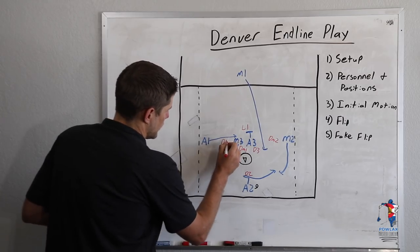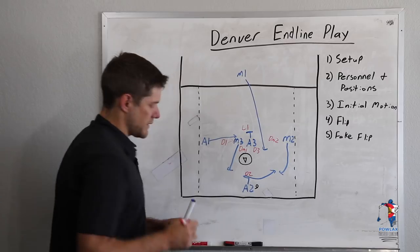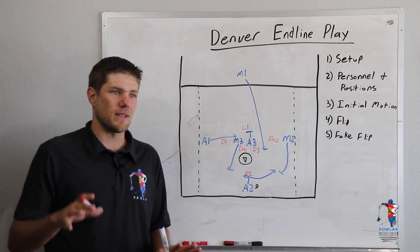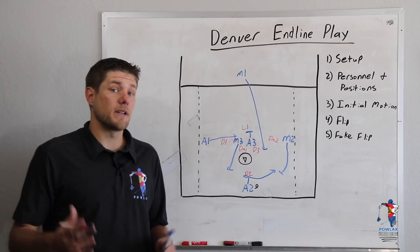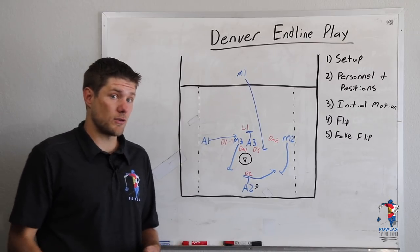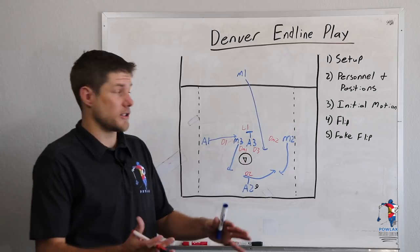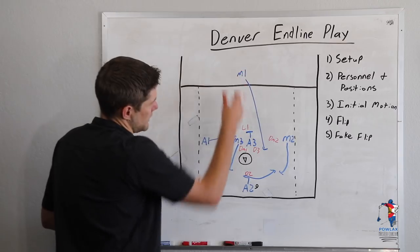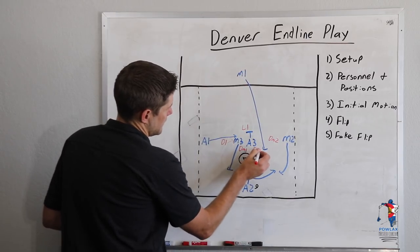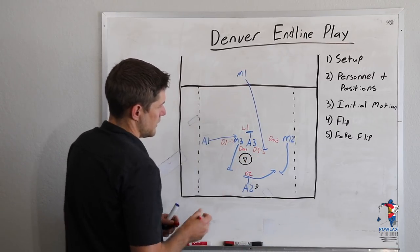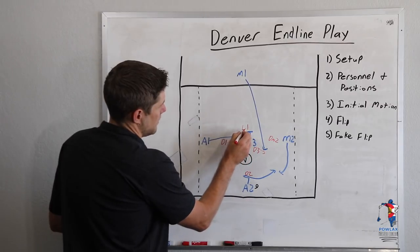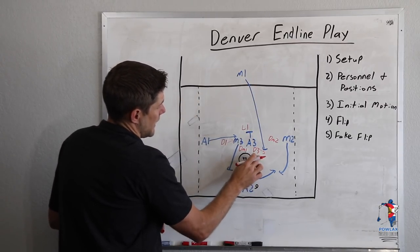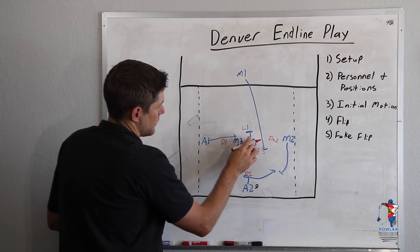Now, Denver used a lot of off ball picks where they would basically push him into the middle. At the high school level, I think you might get an interference call, but because of the physical nature of college lacrosse, you can see them actually pushing the players in. So I'm going to talk about a couple other aspects of this. What we want to do with this M1 cut is we want to generate the switch through D3. So if A3 can set a good enough pick on L1 so that we generate this switch, it's really going to help us as we get to freeing up A3.